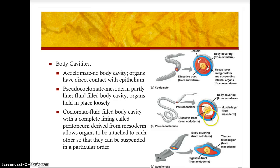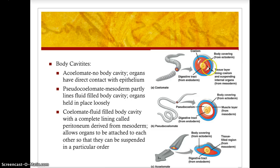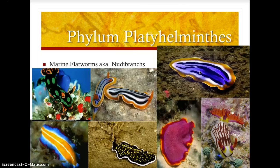In the coelomate body cavity, shown here with an annelid — the earthworm — the fluid-filled body cavity has a complete lining called the peritoneum. That peritoneum is derived from the mesoderm, and it allows the internal organs to be attached to one another so they can be suspended in a particular place. You can see the true coelom there: the body covering is from the ectoderm, the tissue lining the coelom and suspending internal organs is derived from the mesoderm, and the internal organs themselves are derived from the endoderm.